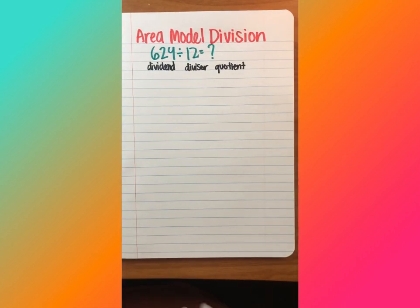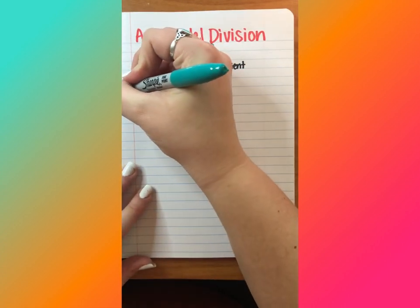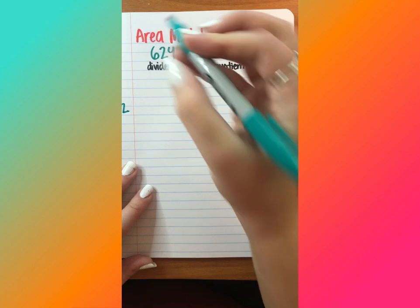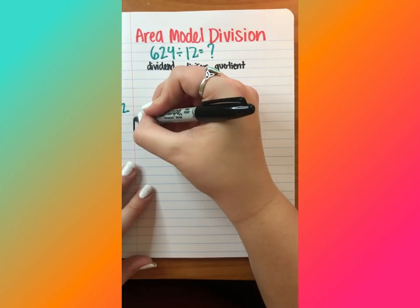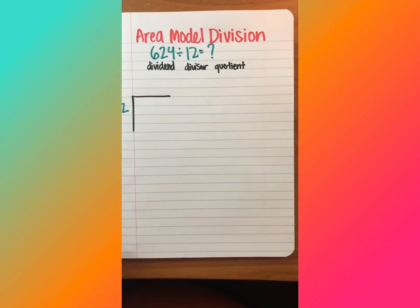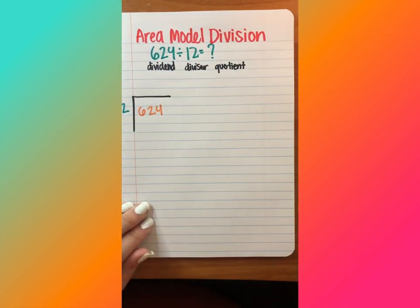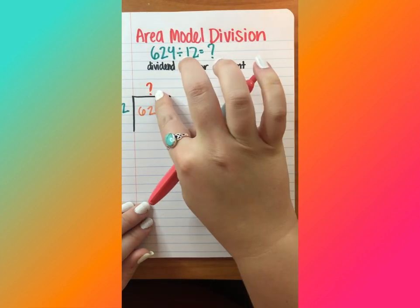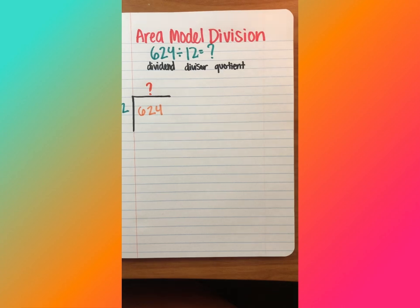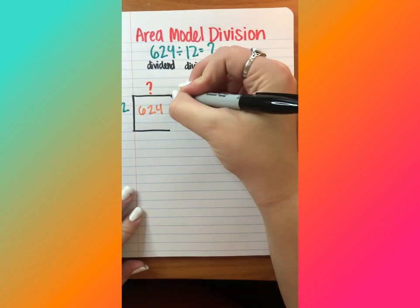And whenever we set up our problem, we are setting it up very similar to a long division problem. It sort of looks like we have that L. So let me show you what I mean. So we have our divisor, which is 12. I'm drawing my L shape and notice it's pretty big. That's important so you can show your work later. So 12 goes into 624 and I'm not really sure how many times that is yet because we're trying to figure out our quotient. And it looks like a long division problem so far, but with area model, the only difference so far in setting it up is boxing it up. So that's how we start out.